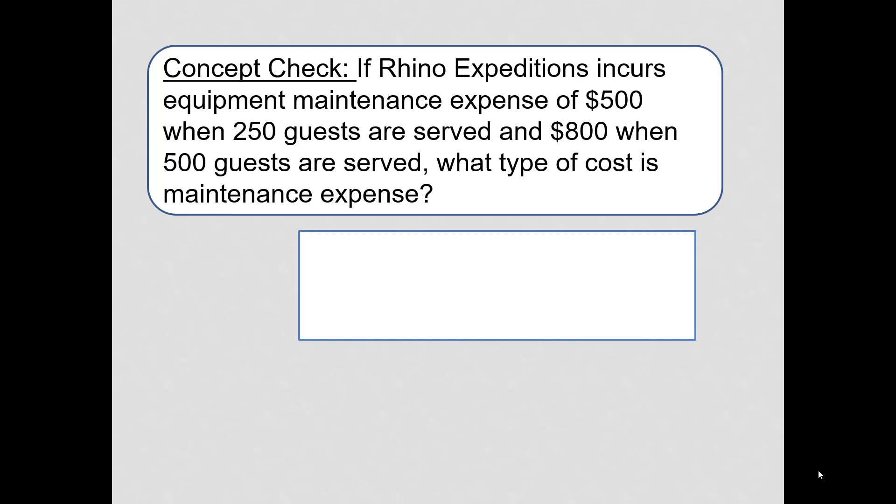To understand this, recognize that we would want to know what happens to the cost in total. It goes from $500 to $800, so it does change. And we would want to know the cost per unit. At 250 guests, the $500 maintenance cost would be $2 per unit. But for 500 guests, $800 divided by 500 guests, it's $1.60 per unit.